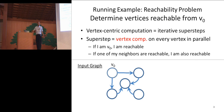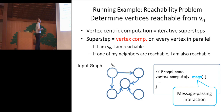I'd like to demonstrate this vertex-centric computation on this small graph. Along with this demonstration, I'd like to show you the concrete code here. PreGEL uses message passing for interaction between vertices, so the vertex computation receives a list of messages in PreGEL.